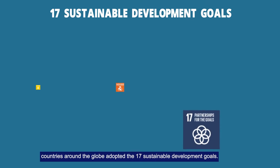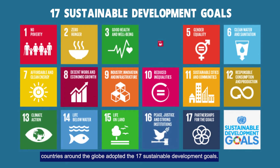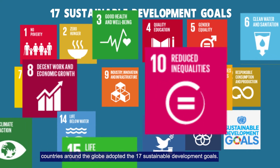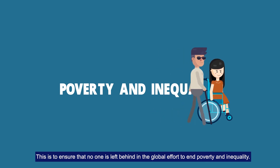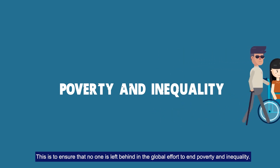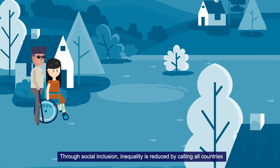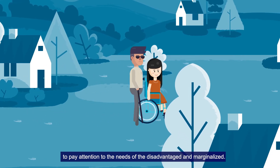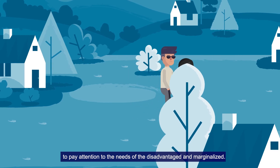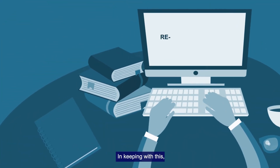In 2016, countries around the globe adopted the 17 Sustainable Development Goals to ensure that no one is left behind in the global effort to end poverty and inequality. Through social inclusion, inequality is reduced by calling all countries to pay attention to the needs of the disadvantaged and marginalized.